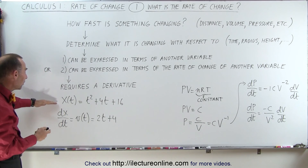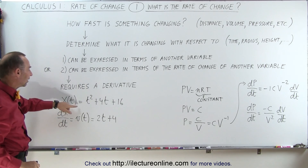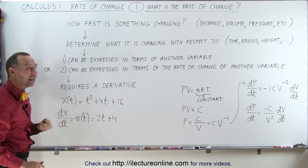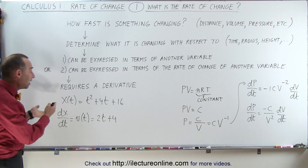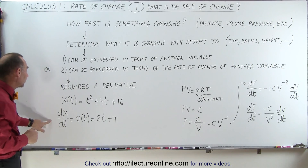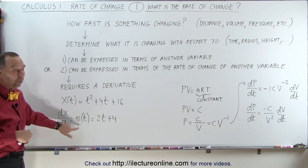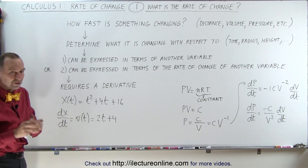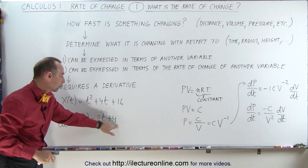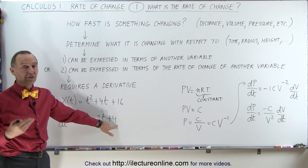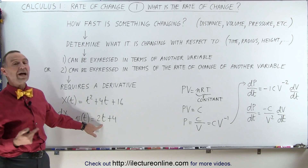So if we take, for example, an equation that describes the position of something with respect to time — and here we can see that's equal to t squared plus 4t plus 16 — if we want to know how fast something is changing with respect to time, in this case how fast the position is changing with respect to time, we take the first derivative of that position with respect to time, which by definition is the velocity. The velocity is the derivative of the position, and when we take the derivative of that, it will be equal to this.